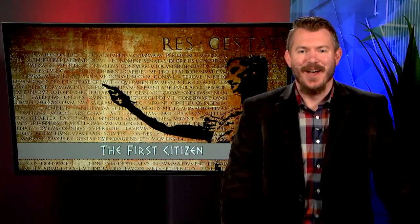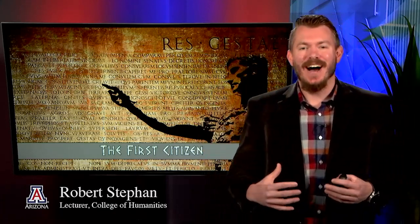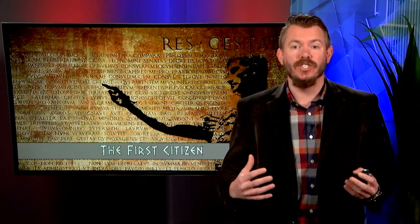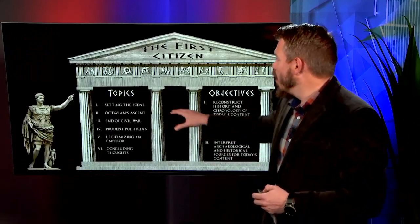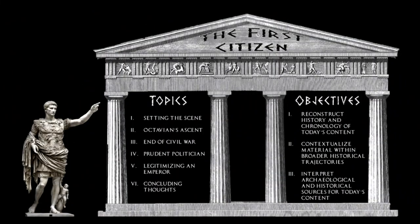Hello, and welcome to today's lecture on The First Citizen. I'm your professor, Dr. Rob Stephan, and today we're going to see how Octavian decides to manage his sole control of the Roman world. We'll start by setting the scene, figuring out how we got to this point, then talk about Octavian's ascent from being the nephew of Caesar to his adoptive heir all the way to the leading person in the Roman world. We'll recap the end of the Civil War, and then figure out how Octavian is seen as this prudent politician who can manage everything to make both the Senate and the people and himself happy. Finally, we'll look at the strategies he uses to legitimize himself as Rome's first emperor.